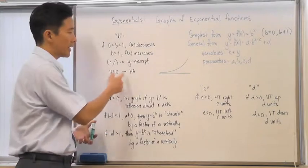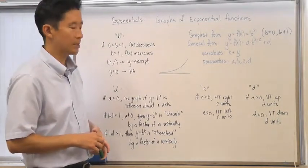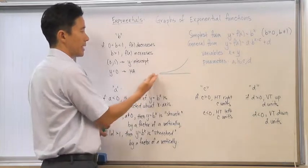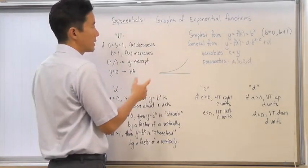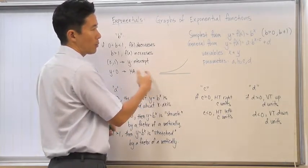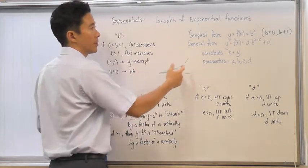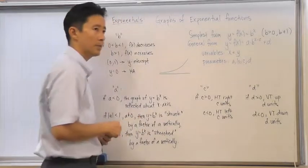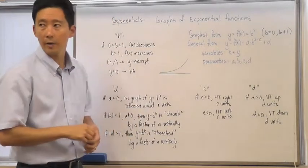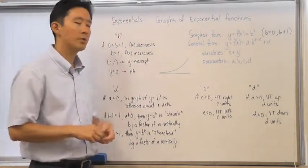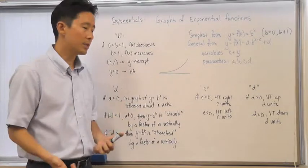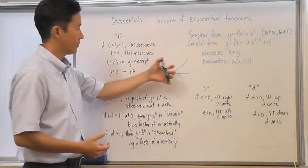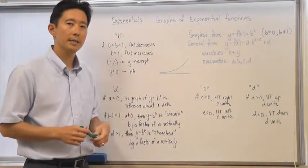The horizontal asymptote for this is going to be y equals 0, or the x-axis. The reason for that is if you take a larger and larger negative value of x and raise b to it, you get a very, very small number that is not going to be 0, but approaches it — which is why the function approaches the x-axis.